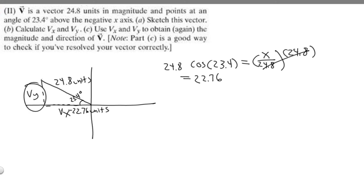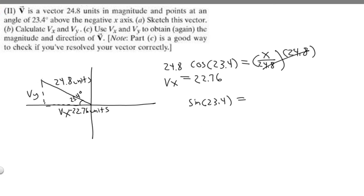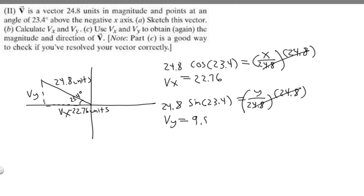Now we need to solve for V sub y. The sine of 23.4 equals opposite over hypotenuse. The side opposite our angle is V sub y, so sine of 23.4 equals y over 24.8. To solve for y, we multiply both sides by 24.8, giving us y equals 24.8 times the sine of 23.4. That equals 9.849, which we round to 9.85. Since we're going upwards, we keep it positive, so V sub y equals 9.85 units.